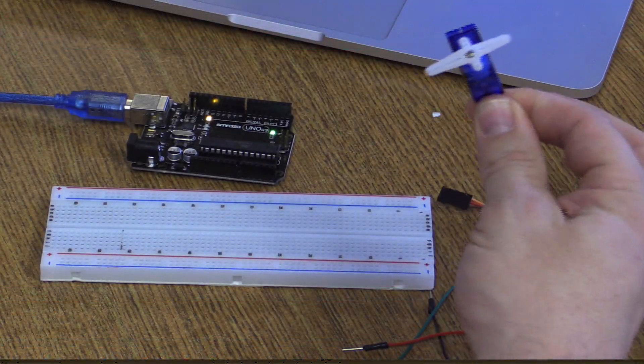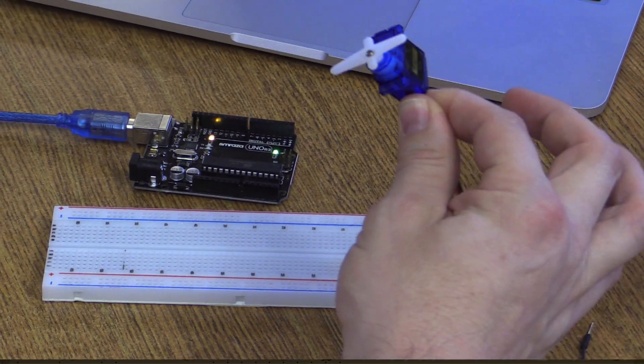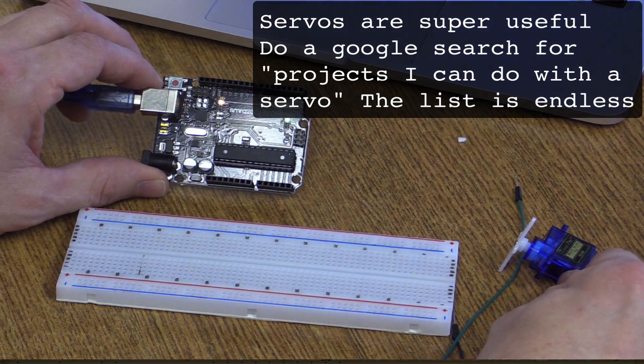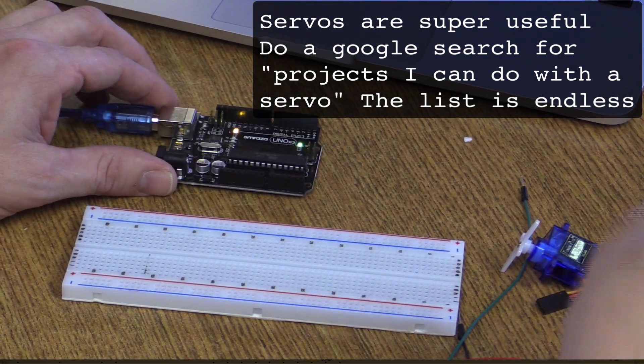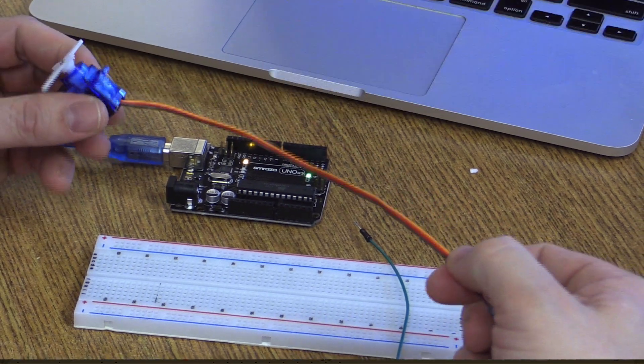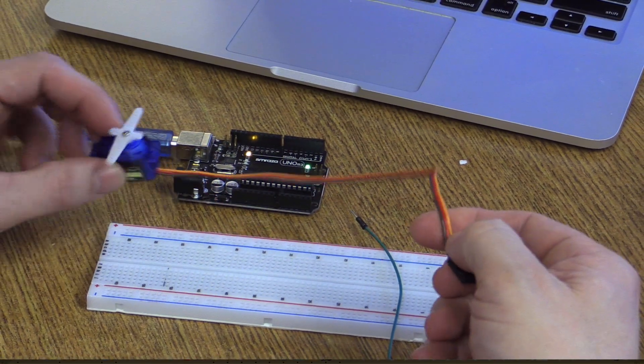So what we're going to do is we're going to go ahead and connect this servo to the breadboard and then we're going to connect the Arduino to the breadboard as well. So first of all, let's take a look at the servo. You'll notice there are three colors. These are pretty standard colors for the servo. The red here, as we've seen in a lot of other cases, is power.